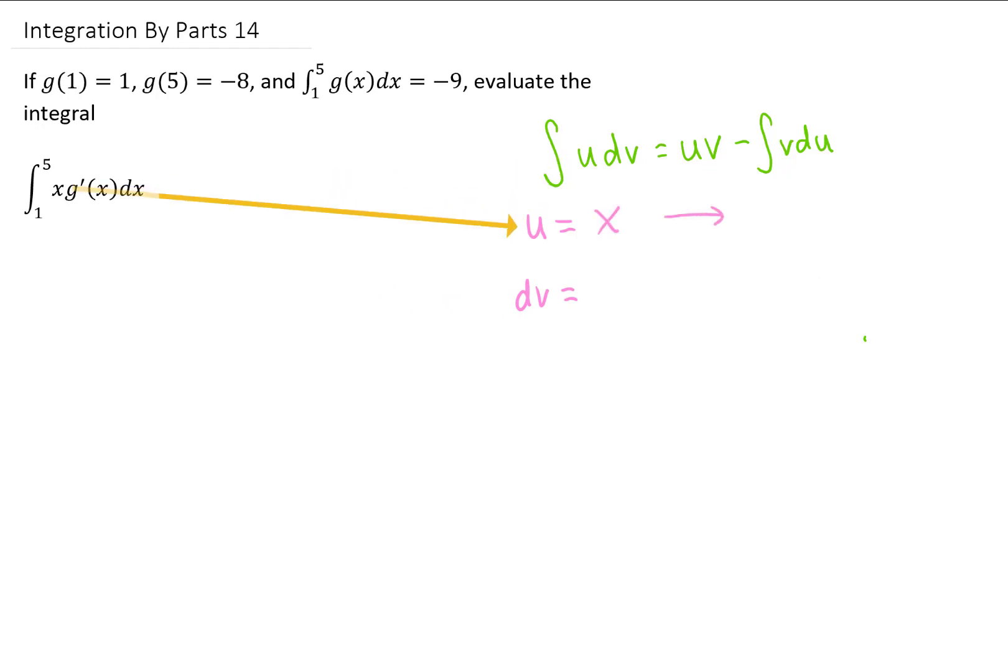then it would make sense to choose u as x, differentiating then gives us dx, and dv would be g prime of x dx.